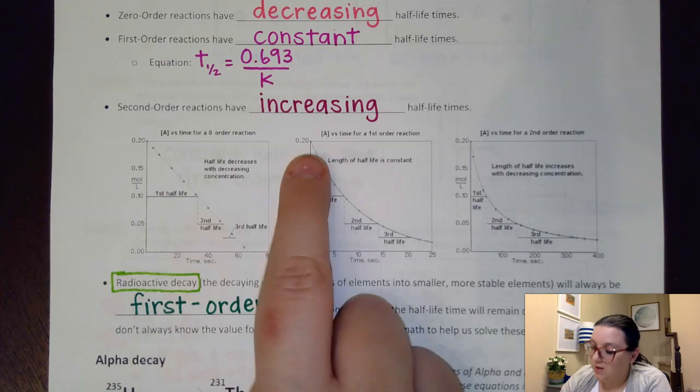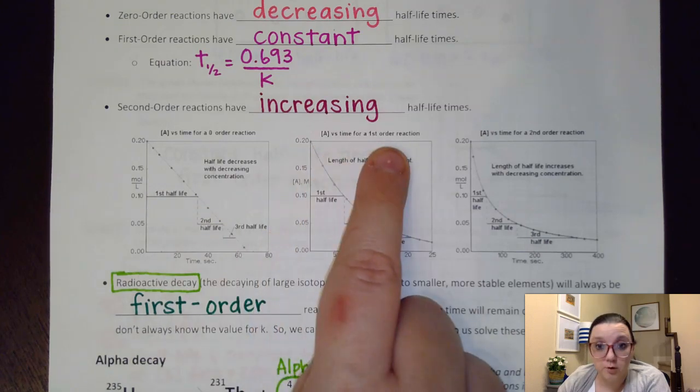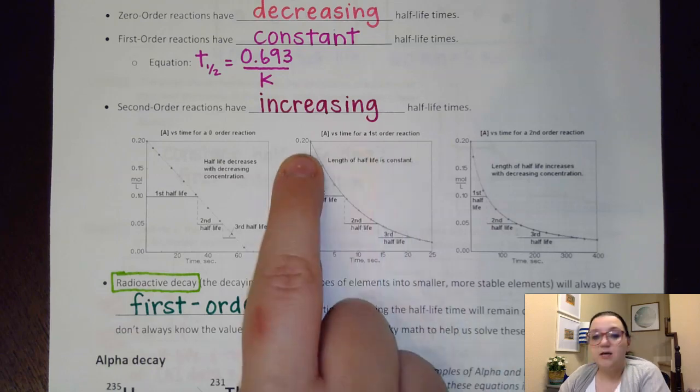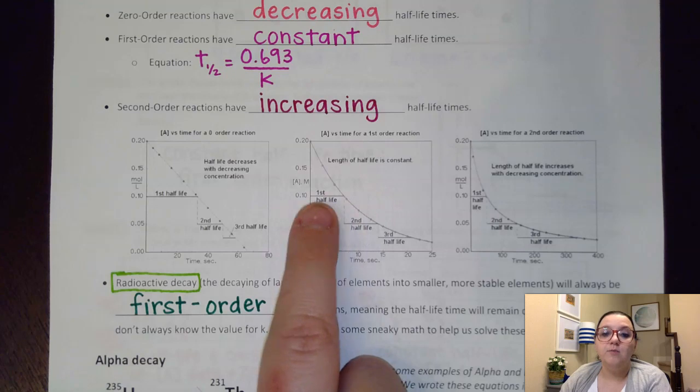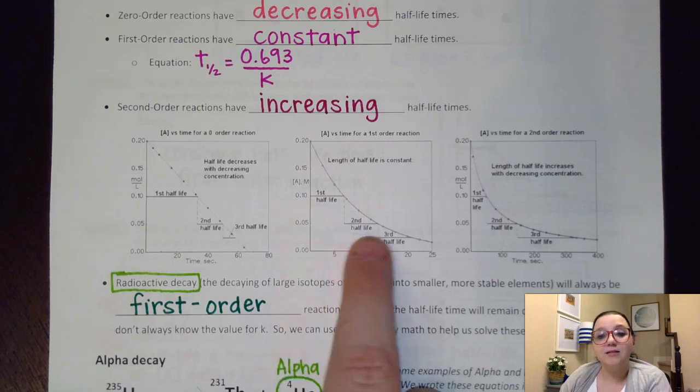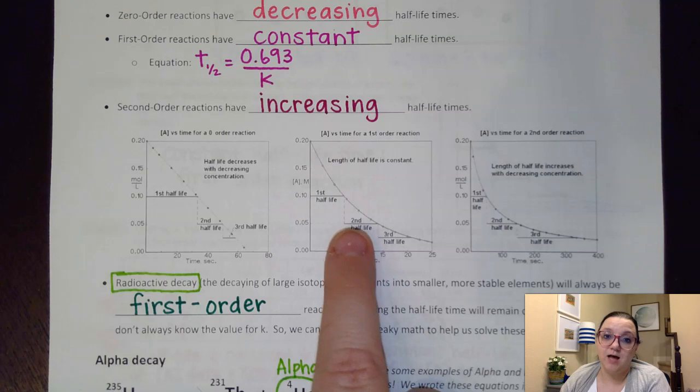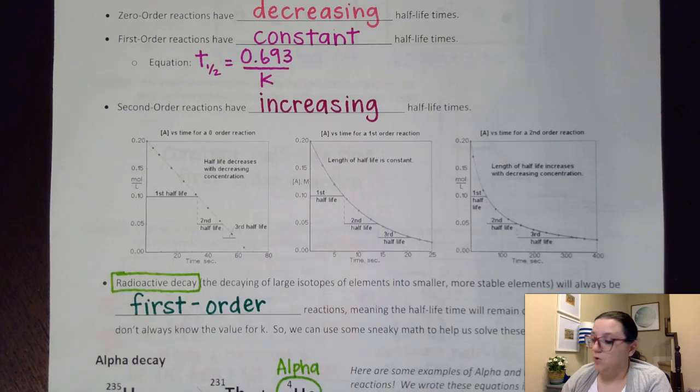So here we see a graph of concentration versus time for a first-order reaction. And we see as I go from 0.2 down to 0.1, that takes a certain amount of time. But if I cut that 0.1 in half down to 0.05, I can see that it took the same amount of time to cut in half the second time or the third time or keep on going from there.